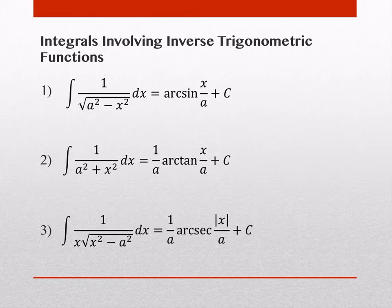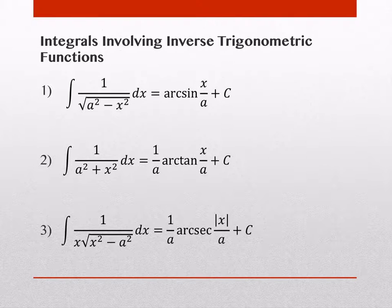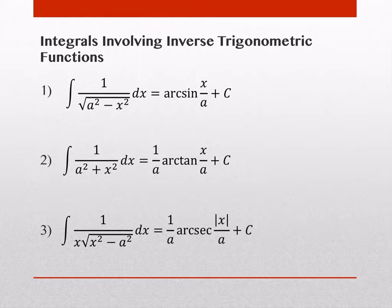You might wonder where arc cosine, arc cotangent, and arc cosecant went. When we did the derivatives of each of those co-functions, they were the same except for a negative sign — sine and cosine, tangent and cotangent, secant and cosecant. That's why there's not another arc trig integration formula; there's really no difference except that negative sign. So there are only three to memorize instead of six. And of course, you see the plus C on the end of each of these.